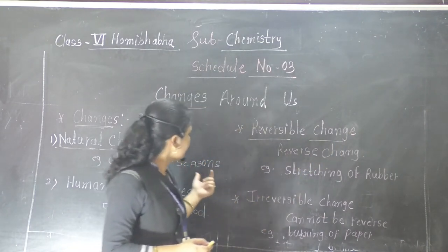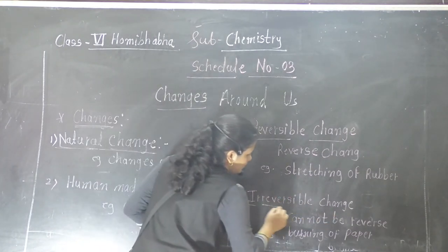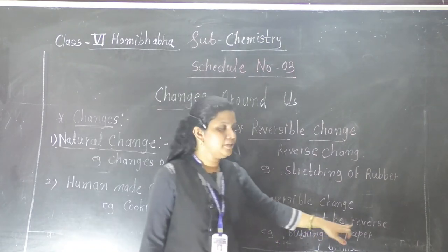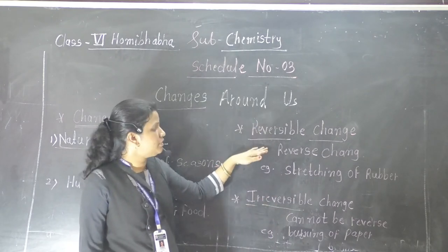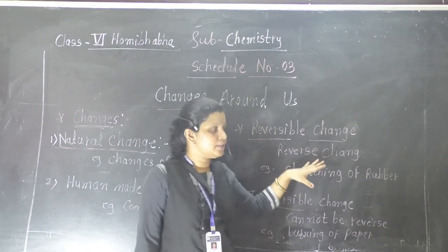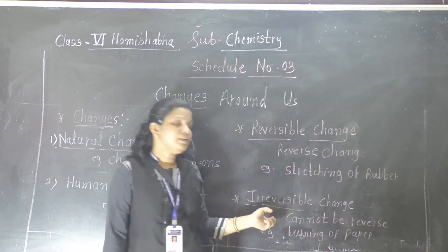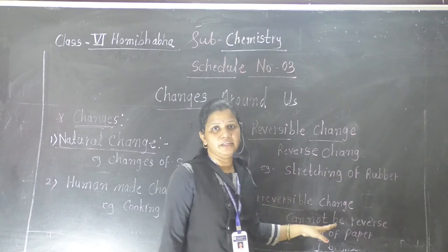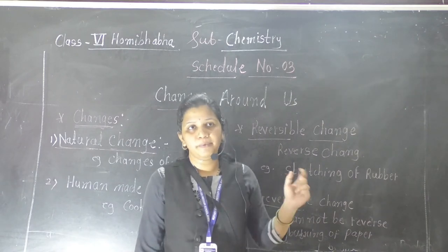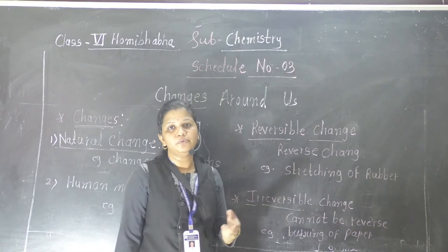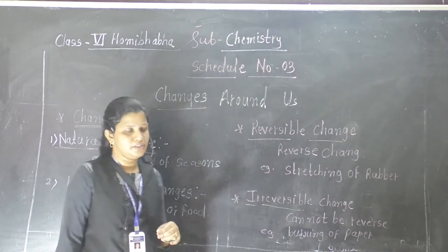The second type of change is irreversible change. Irreversible change means it cannot be reversed again — it is totally opposite to reversible change. In reversible change, the original substance can be obtained back. But in irreversible change, once the change occurs it cannot be reversed. For example, burning of paper — if you burn paper, you cannot get the original paper back; it turns into ash. So we cannot get the original substance back.